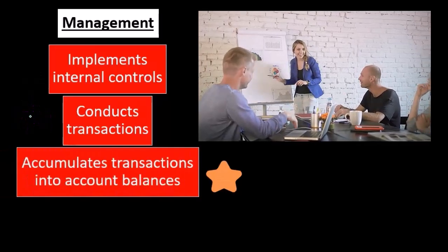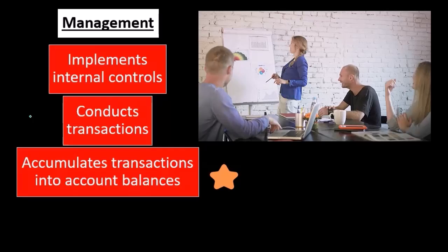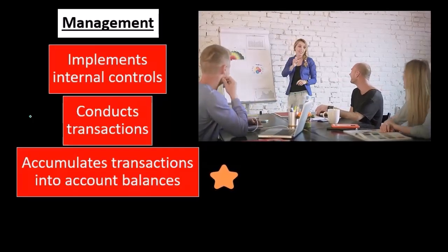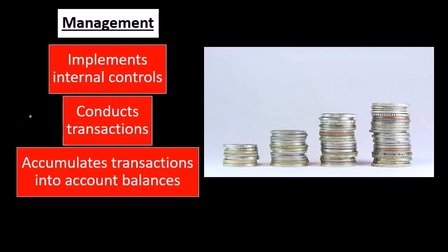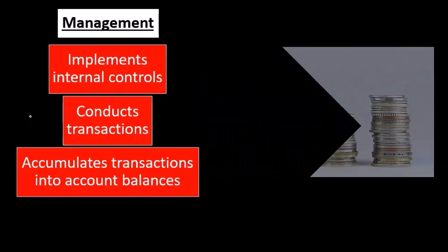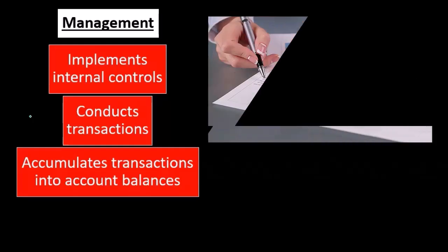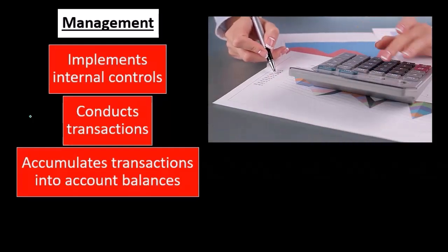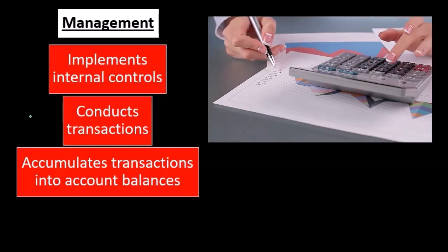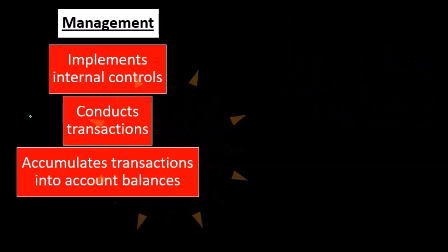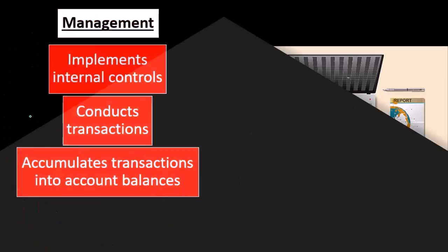Really key and really important are the internal controls. Management conducts the actual financial transactions throughout the year — they're going to record and compile the information. Debits and credits are recorded to accumulate transactions into account balances. This is general ledger accounting — management is responsible for taking those transactions and compiling them into balances, such as a trial balance.